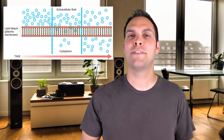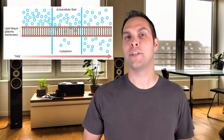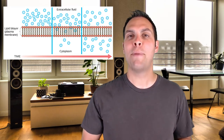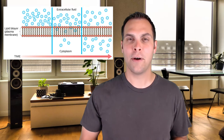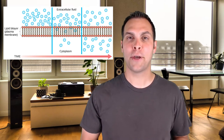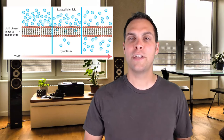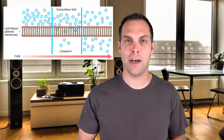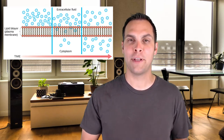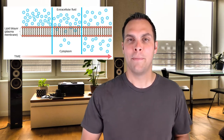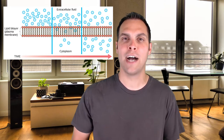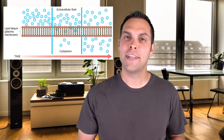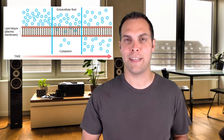The easiest form of passive transport to understand is simple diffusion. Some things are able to pass freely across the plasma membrane — these are small hydrophobic substances like carbon dioxide, oxygen, and nitrogen. They're small and hydrophobic enough to squeeze between the hydrophobic tails of the phospholipids. The downside is because they go through free diffusion, we're not able to regulate that behavior at all.